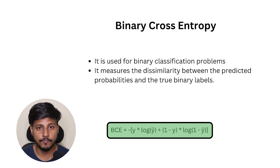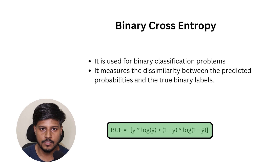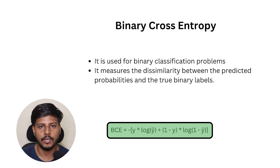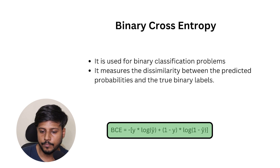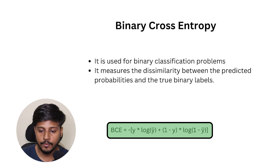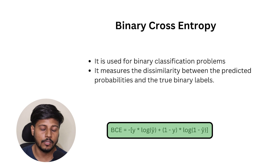Binary cross entropy is suitable for binary classification problems. It measures the dissimilarity between the predicted value and the actual value. Mathematically: binary cross entropy equals negative of [y_actual × log(y_predicted) + (1 − y_actual) × log(1 − y_predicted)]. If you are already familiar with logistic regression, you may already know this equation.